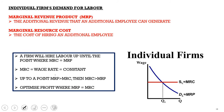For an individual firm's demand for labor in a purely competitive labor market, you have marginal revenue product (MRP) representing demand and marginal resource cost (MRC) representing supply. Your MRP is the additional revenue that an additional employee can generate, and your MRC is the cost of hiring an additional employee. A firm will hire labor up until the point where MRC equals MRP, because after this point your MRC is higher than your MRP — meaning costs exceed product — so you stop hiring. Where MRC equals MRP is where you optimize profit.